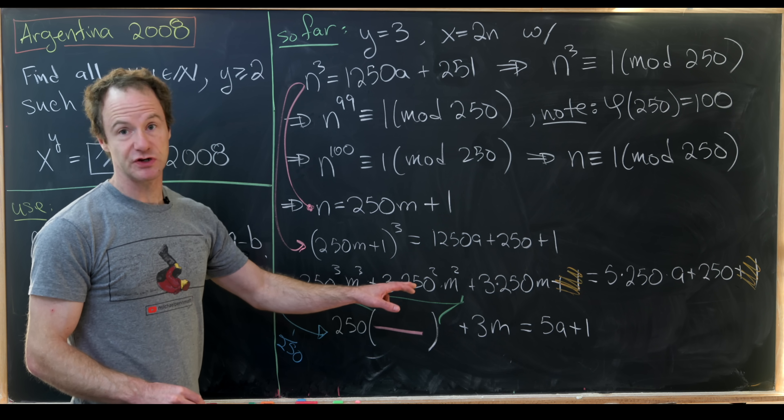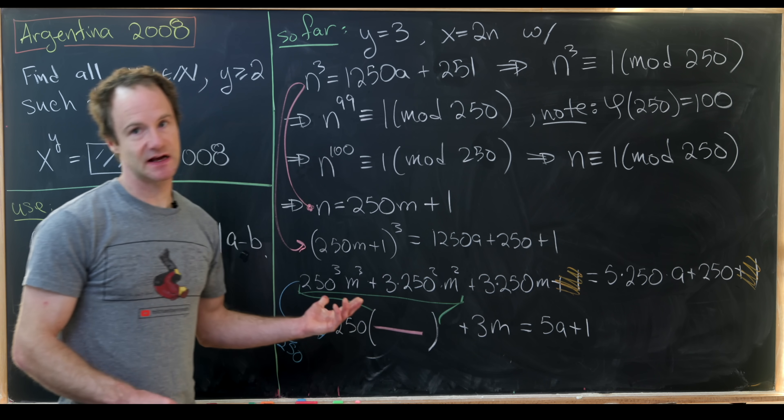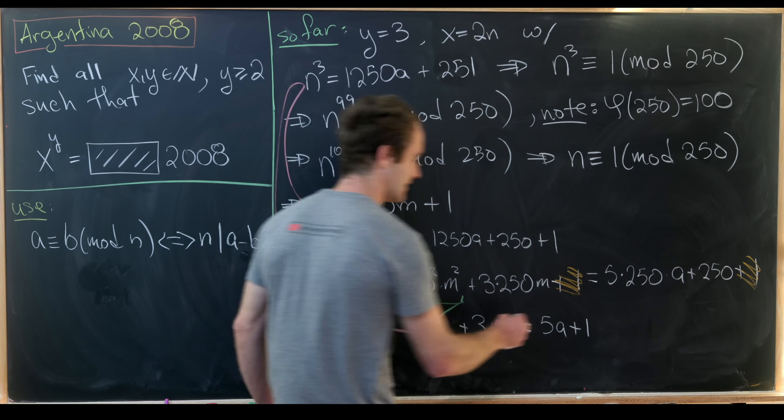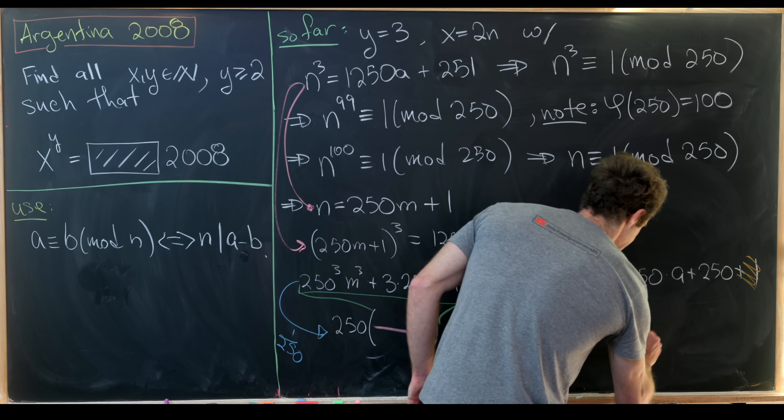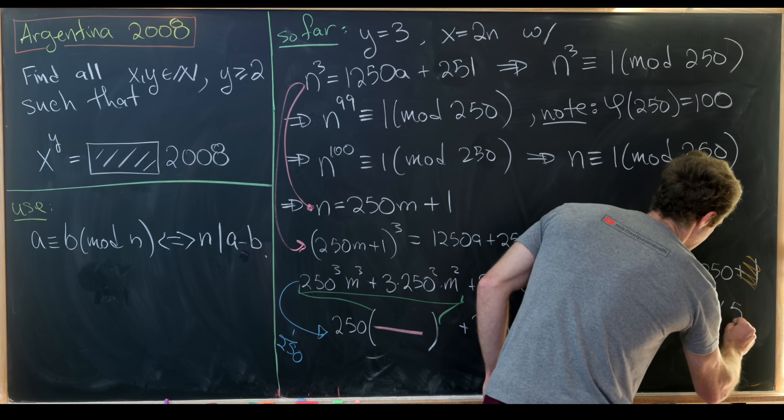Now let's reduce this mod 5. So 250 is a multiple of 5. 5 times a is obviously a multiple of 5. That gives us 3 times m is congruent to 1 modulo 5.